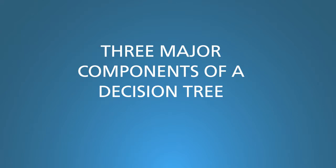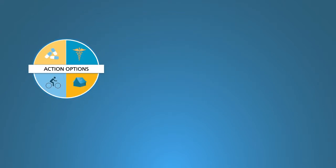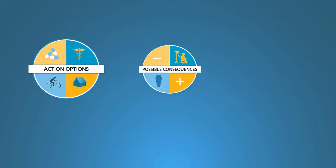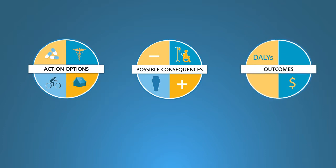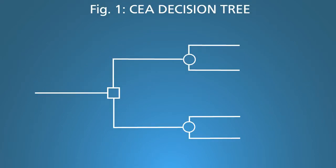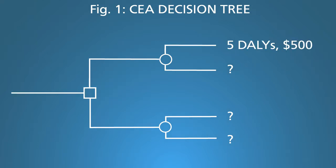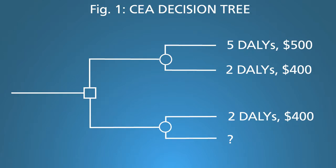There are three major components of a decision tree: action options, which show the decision being considered; consequences, which describe the mix of outcomes and their probabilities; and the value of health and cost outcomes for each set of consequences. Once you have these in a tree, you can calculate the expected value of each action option for health and cost outcomes, and determine your cost-effectiveness ratio to make better decisions about health spending.